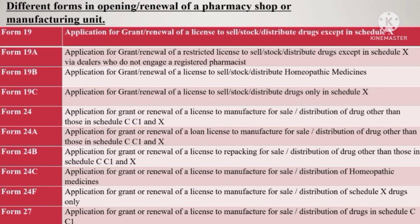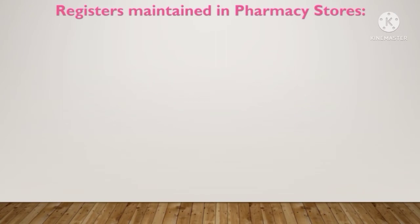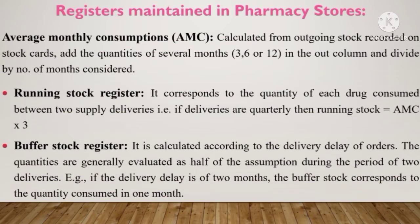Sometimes they ask about the registers maintained in pharmacy stores. Basically two registers are maintained: the running stock register and the buffer stock register. The running stock register corresponds to the quantity of each drug consumed between two supply deliveries, while the buffer stock register is calculated according to the delivery delay of orders. Average monthly consumption can be calculated from outgoing stock recorded on stock cards over three, six, or twelve months, divided by the number of months considered.